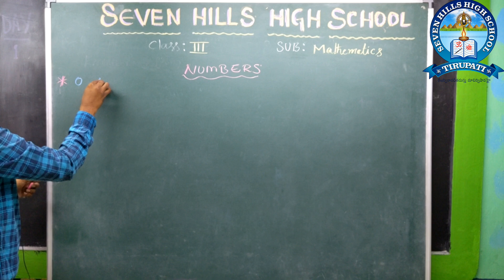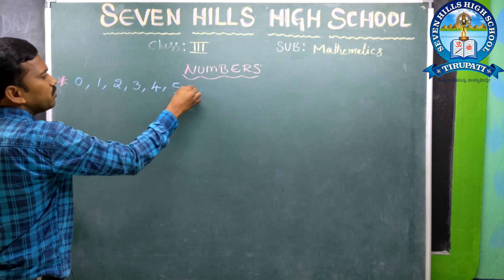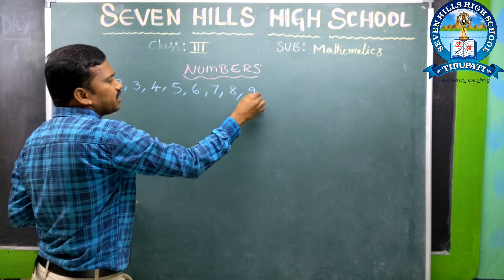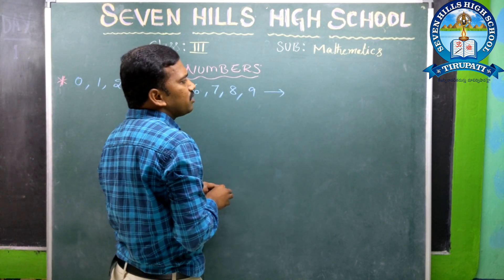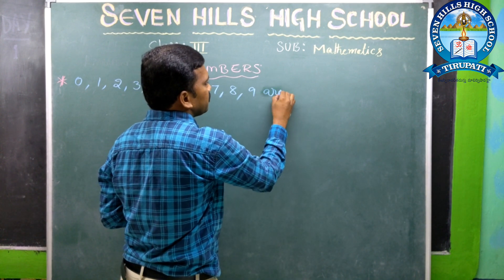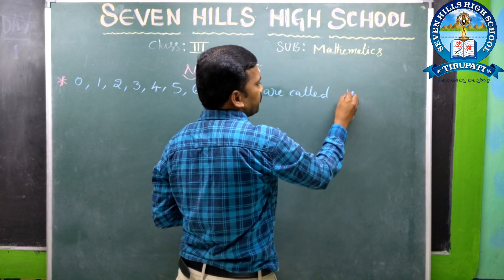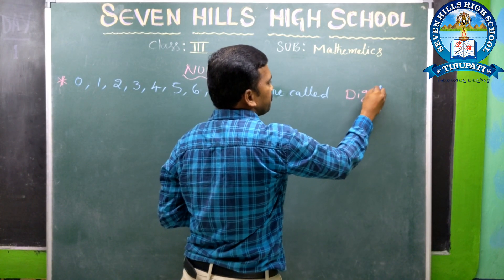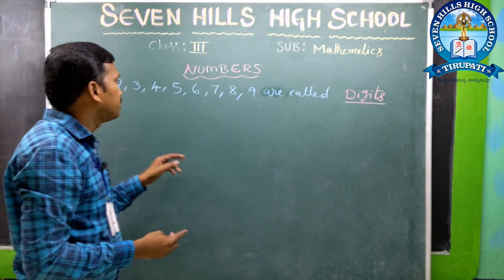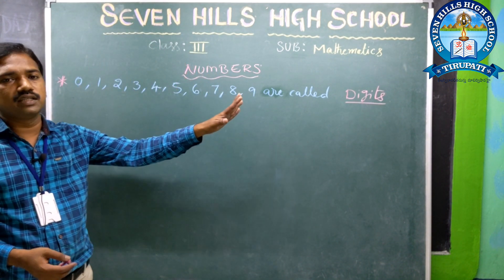0, 1, 2, 3, 4, 5, 6, 7, 8, 9 — these are called digits. 0 through 9 are called digits.